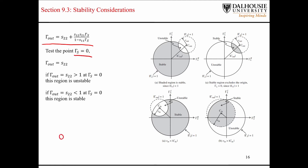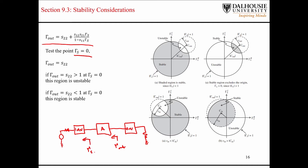We have our source, then an input matching network, then the amplifier, then an output matching network — and there's Γ_out. Γ_S is going to be the reflection coefficient seen looking into the output of the input matching network. If you set Γ_S equal to zero, that means the input to the amplifier and the input matching network are perfectly matched. And if |S22| is less than one, then you are in the stable region.